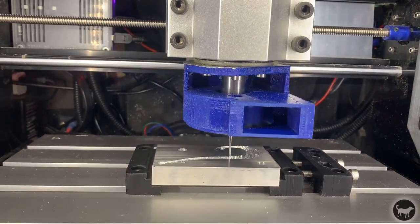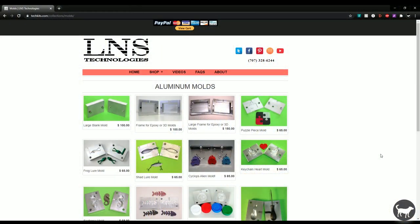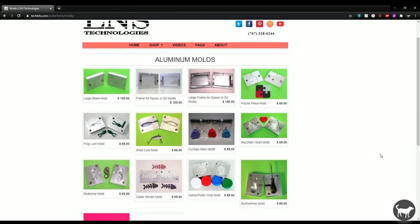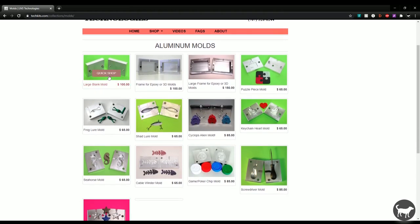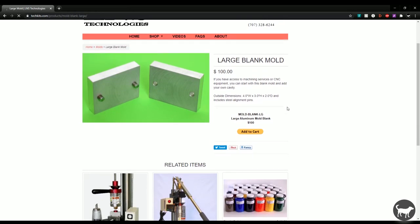First place I start is where to source the material to create the molds in the first place. If you search online, you can find companies that sell blank molds that are ready to be cut. These are great mold blanks and require the least amount of work, but may not be the cheapest option out there.